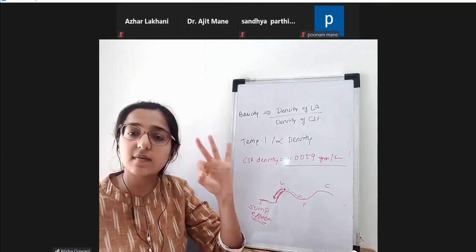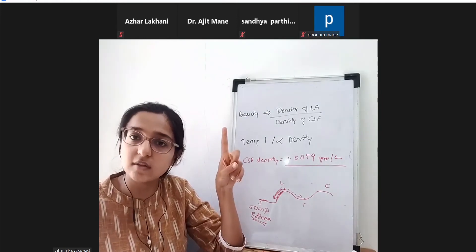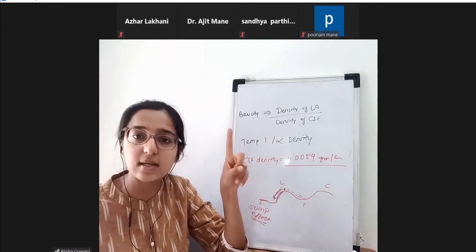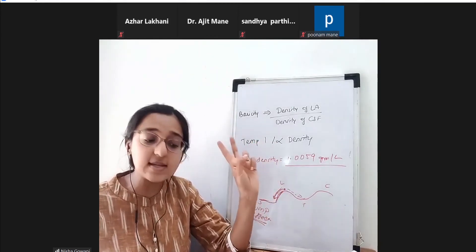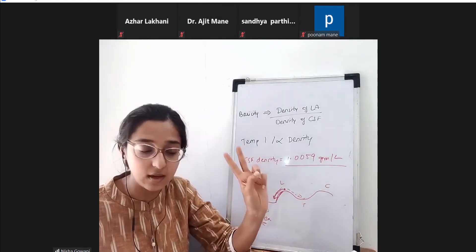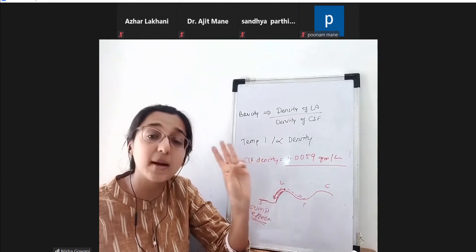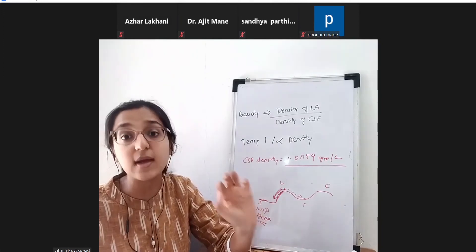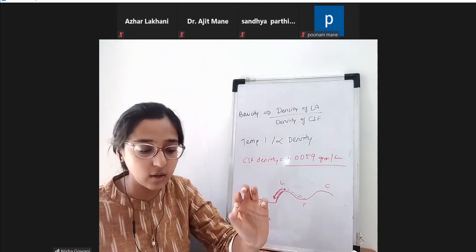Regarding direct effects of spinal anesthesia: there are three sites where local anesthetic acts. The first is the nerve roots — the CSF bathes the nerve roots and local anesthetic acts on them. The second is the dorsal root ganglion. The third is the spinal cord itself, but its action there is very limited, almost negligible.